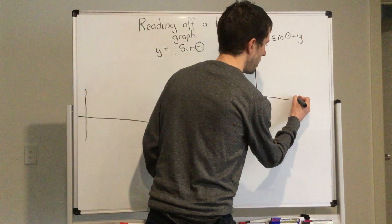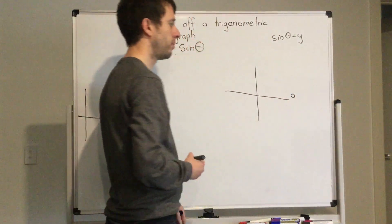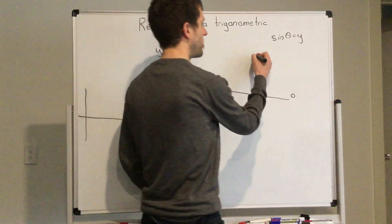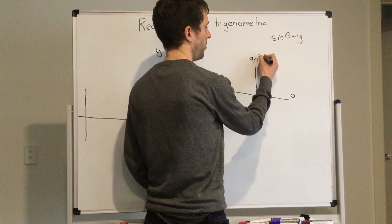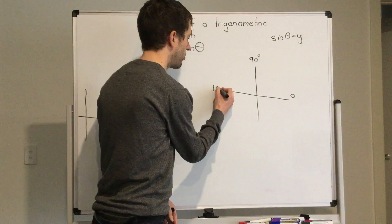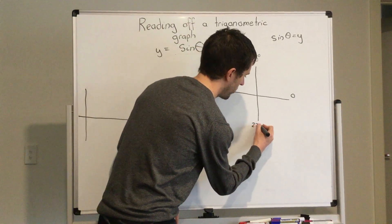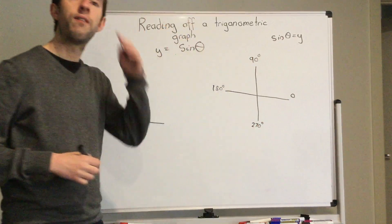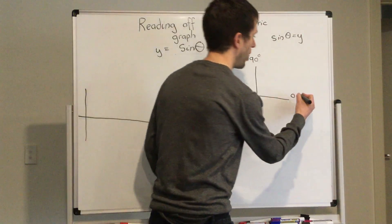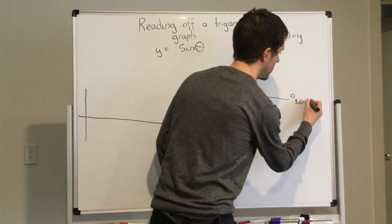If I'm using radians, I could also write it as 360 degrees is 2π, 180 degrees is π, 90 degrees is π divided by 2, 270 degrees is 3π over 2.